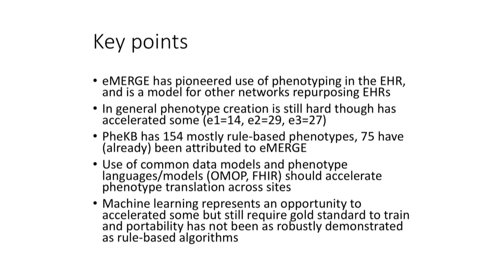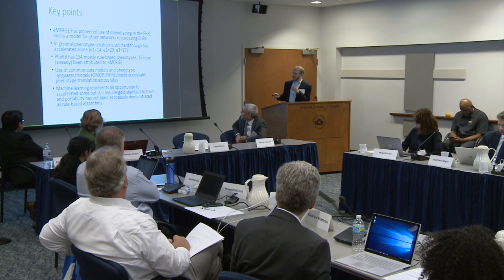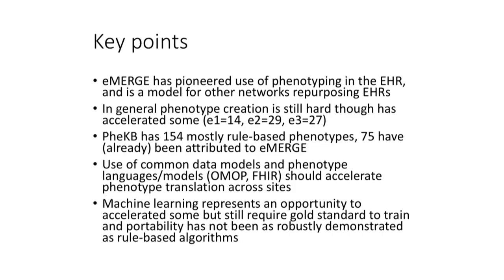These 75 phenotypes are mostly what's happened in phases 1 and 2. Most of the 27 actually aren't on there yet, so it's a superset and a subset — it highlights that we're doing a lot of things that aren't actually captured. These are all validated phenotypes, and most are multi-site validated, which speaks to the transportability question.